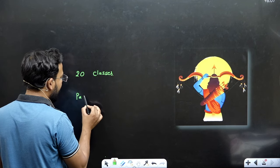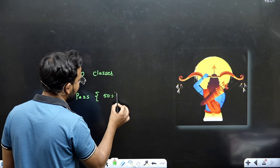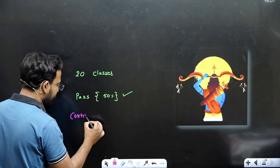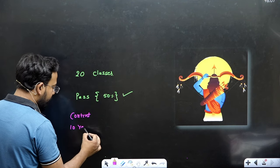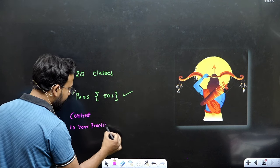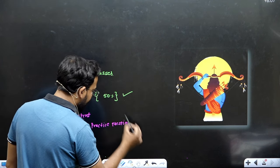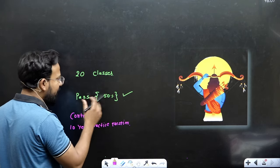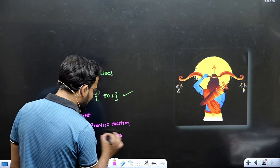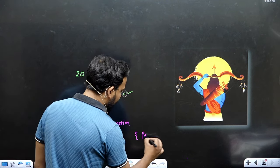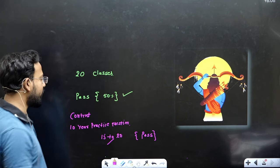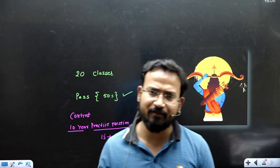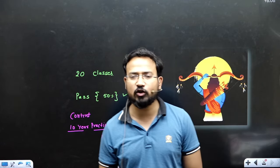If you watch around 20 classes, you will pass. At least you will get 50% of your score — that is the Ram Maan. Go to my content, find the unit-wise folder, and practice the 10-year practice questions. If you just need passing marks, watch those practice question lectures. If you want a full score, go through the last 10 years of complete question papers — no one can stop you from getting a full score.